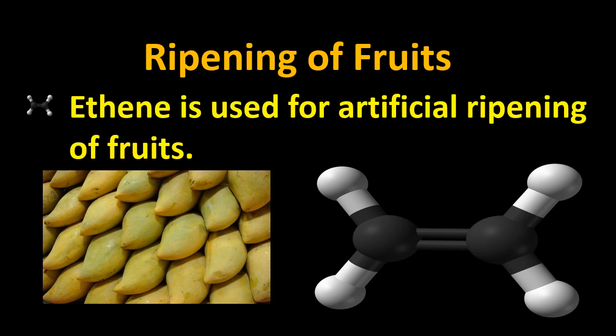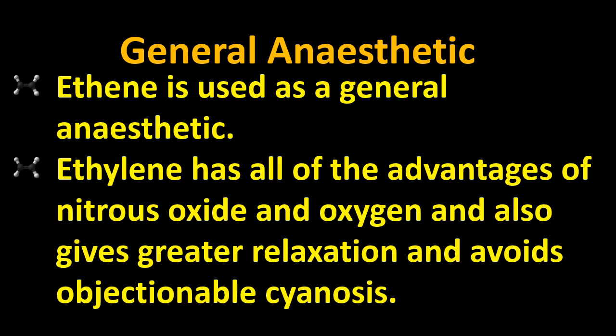Because Ethene is a gas and it provides softness and more color to the fruits. Ethene is also used as an anesthetic. Anesthetic is used to anesthetize a person — anesthesia means temporary loss of sensation and awareness. We use this mostly before operations so that the person will not feel lots of pain during surgeries.